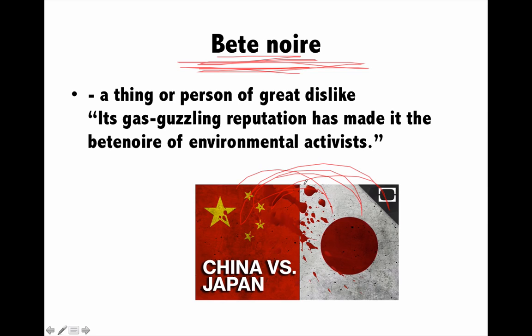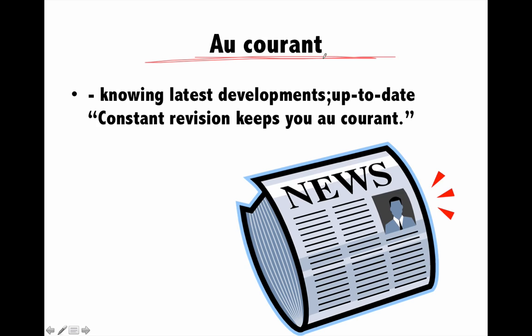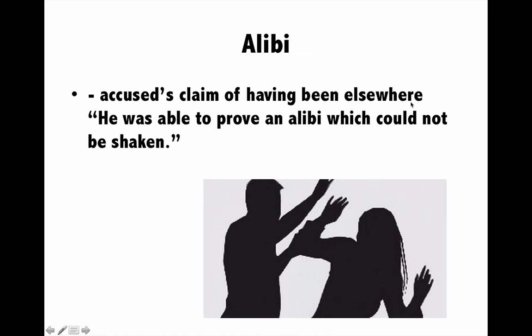Next is 'au courant', which means keeping yourself up to date — very knowledgeable about the latest happenings. When you know everything that is happening currently, you are au courant. For example, if you read the newspaper daily, you are up to date — in other words, you are au courant. Au courant means you know the latest information and are quite up to date.